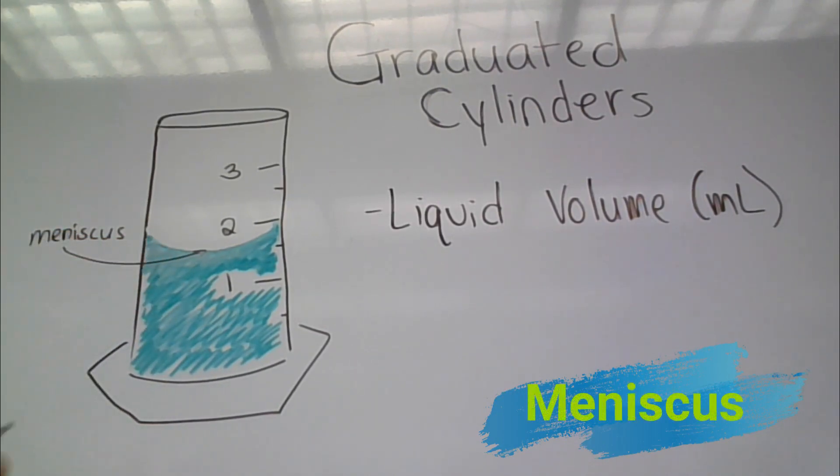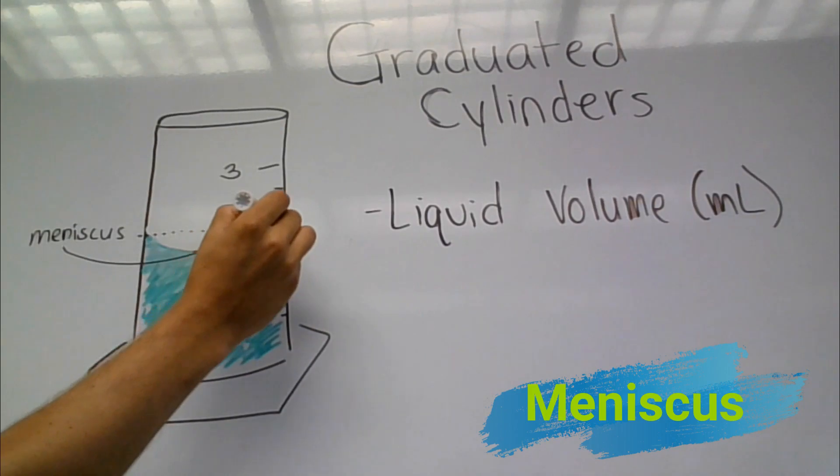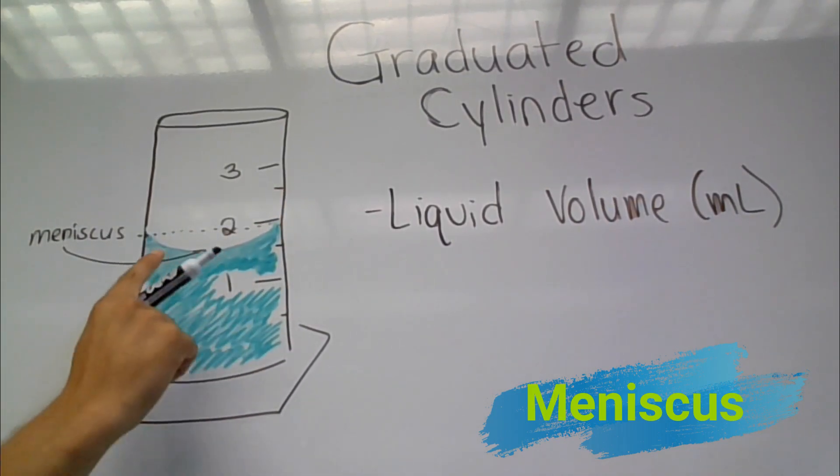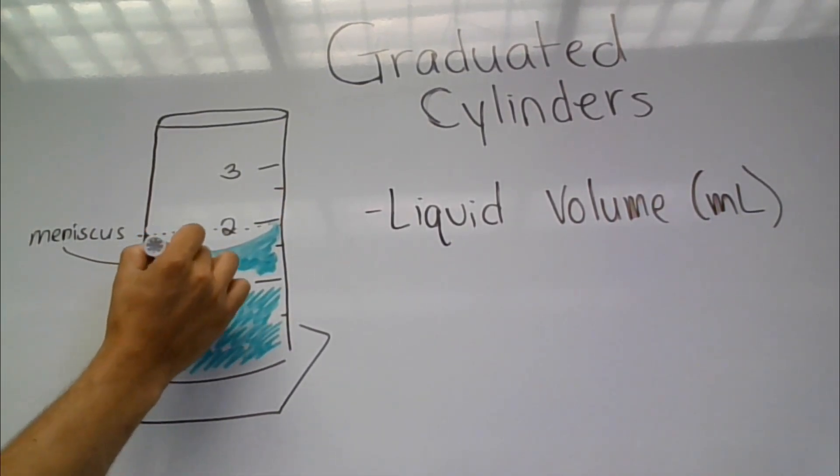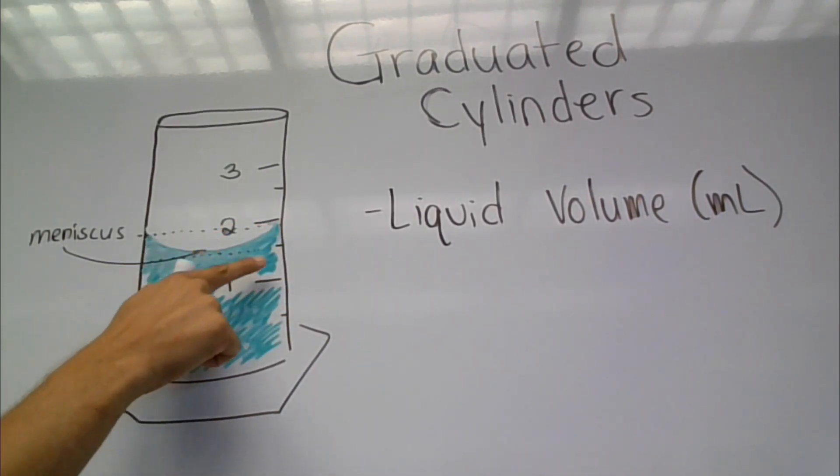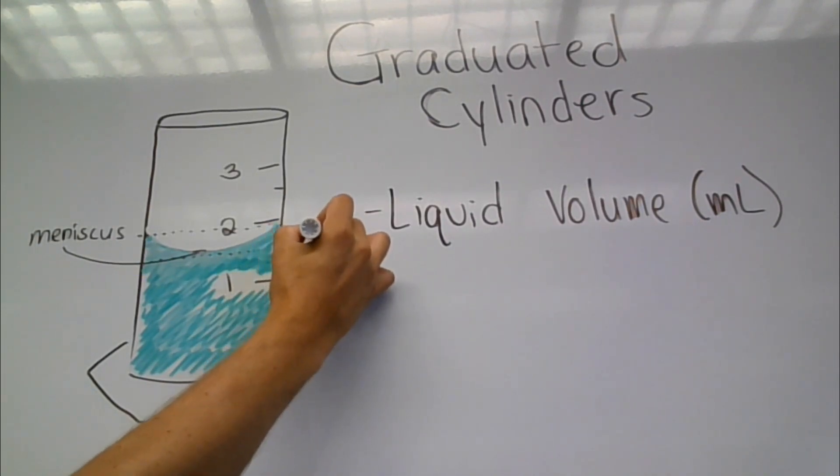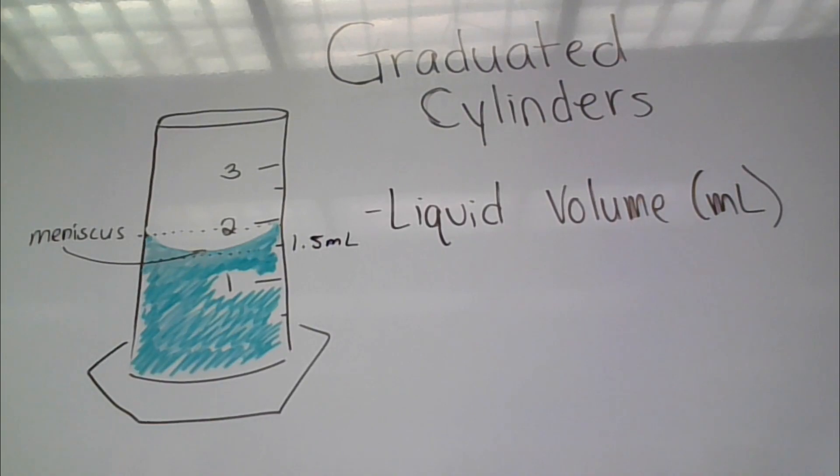The high part is at two milliliters, however that is not the measurement we want. We look at the bottom. If we make a dotted line across here, we see it's between one and two, and there's a little half mark, so it's actually going to be 1.5 milliliters. Be very careful looking at your measurements.